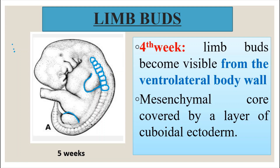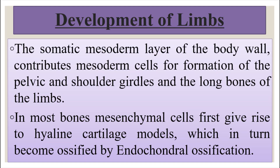This is a diagram of the embryo at five weeks. The development of the limb starts when the somatic mesoderm layer of the body wall contributes mesoderm cells for the formation of the pelvic and the shoulder girdles and the long bones of the limbs. In most bones, mesenchymal cells first give rise to hyaline cartilage models which in turn become bone by ossification processes known as endochondral ossification.